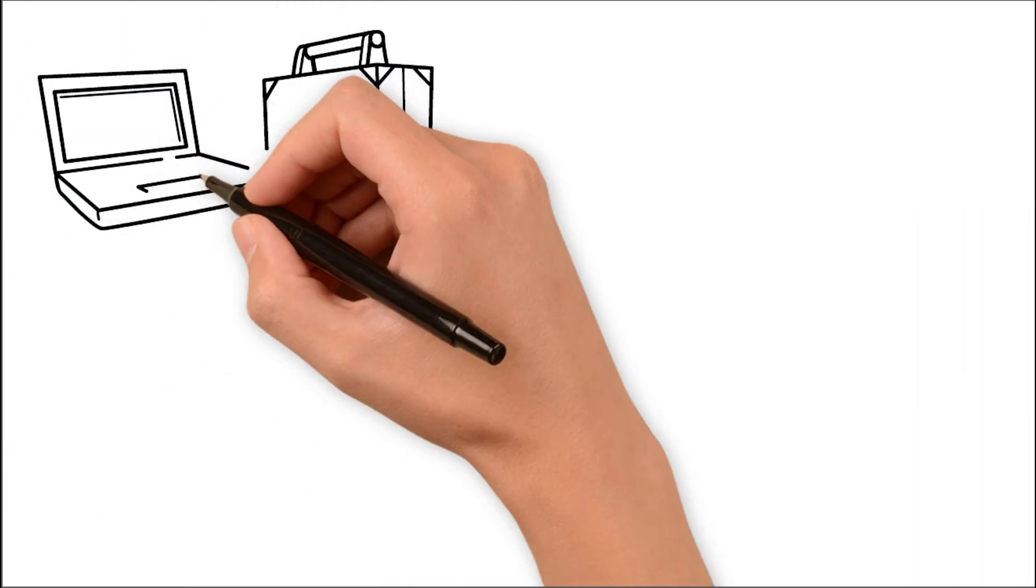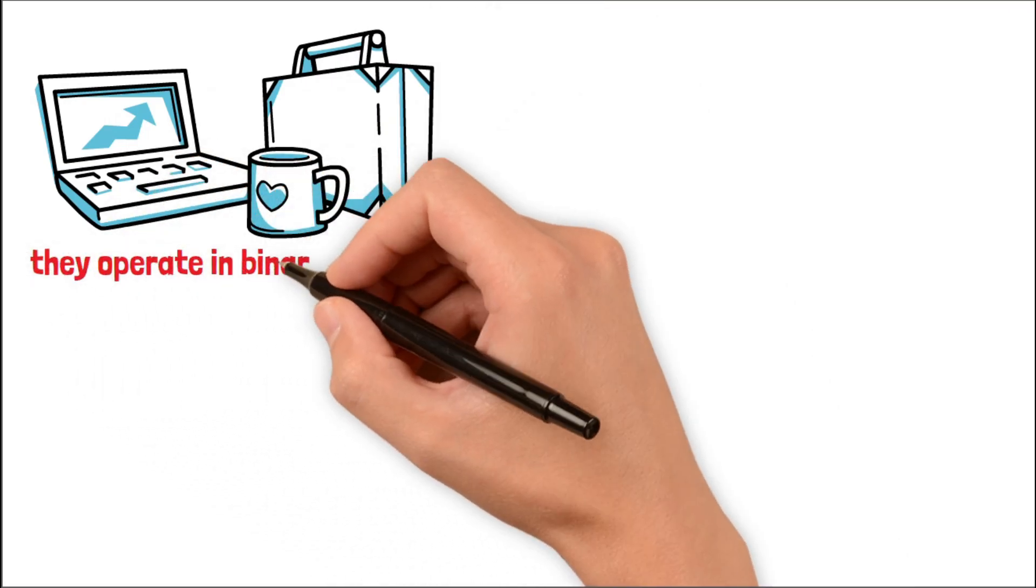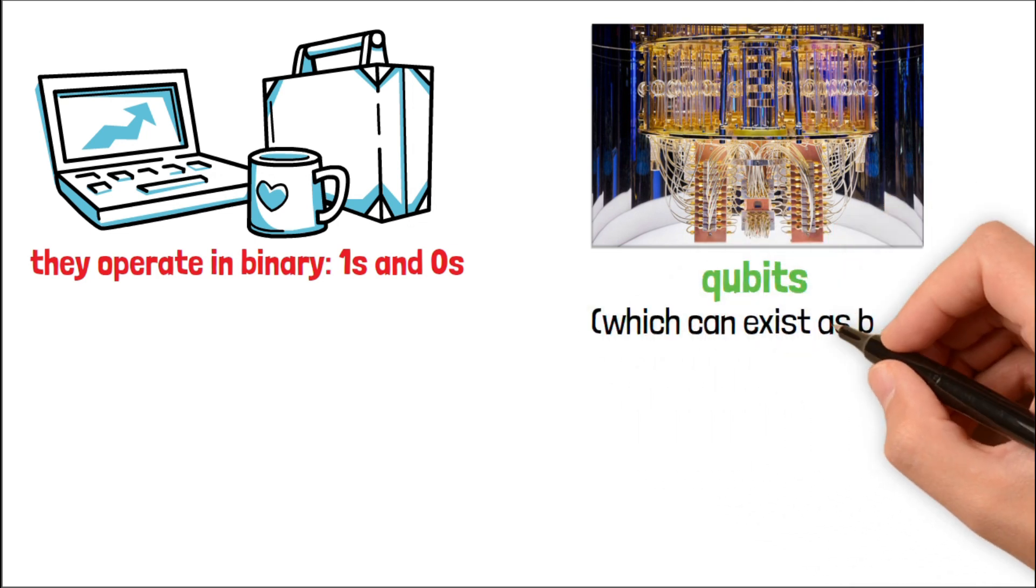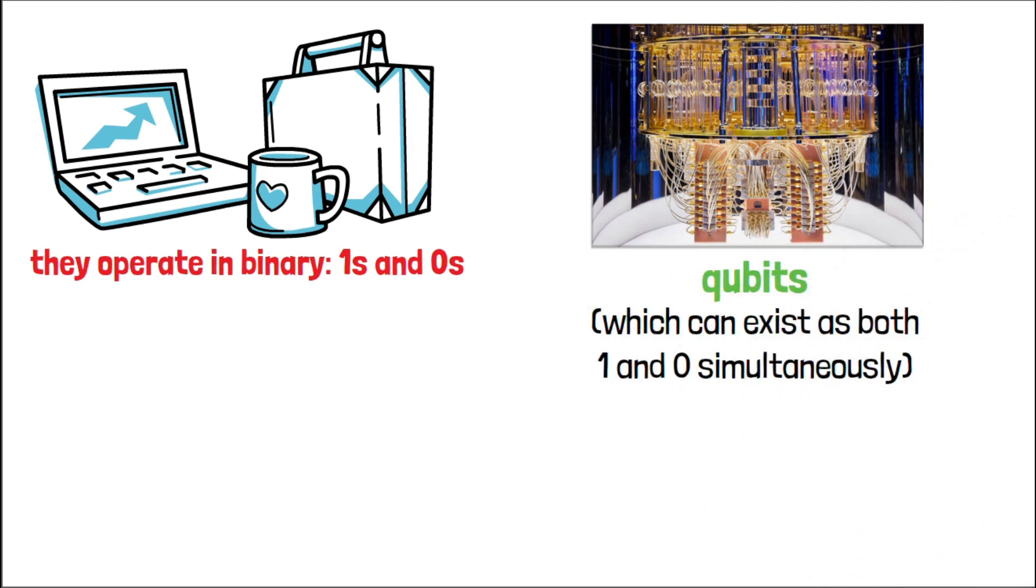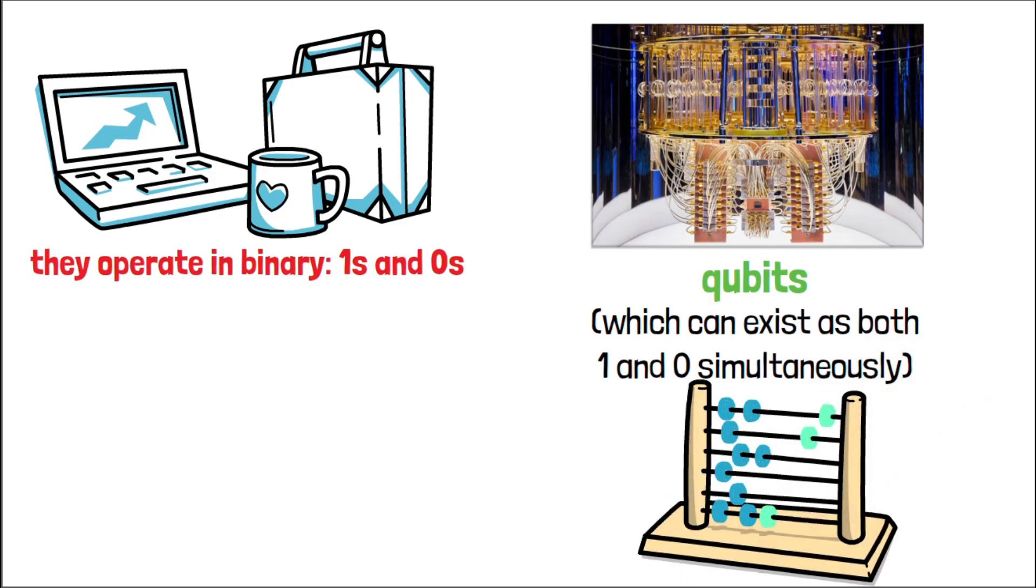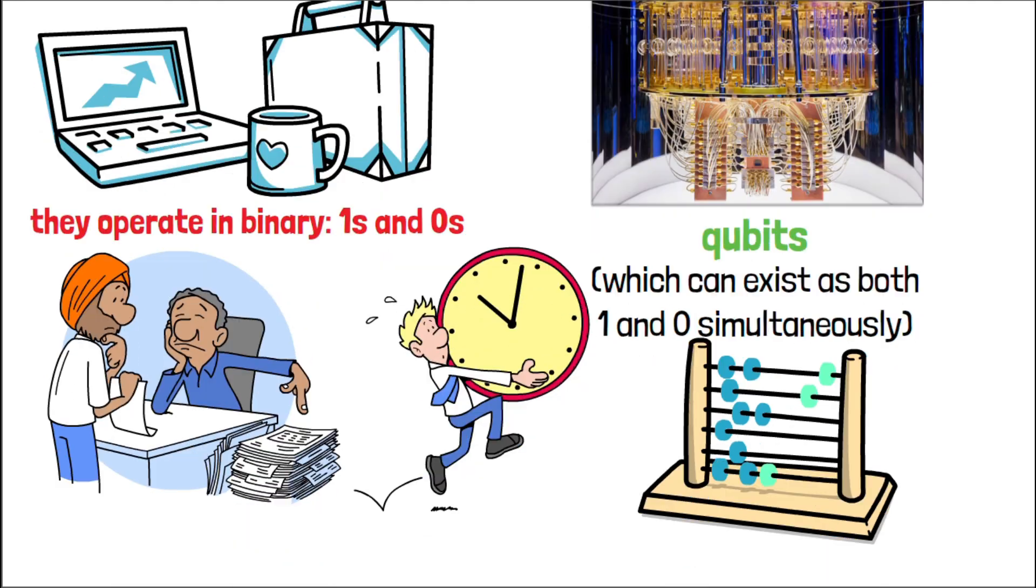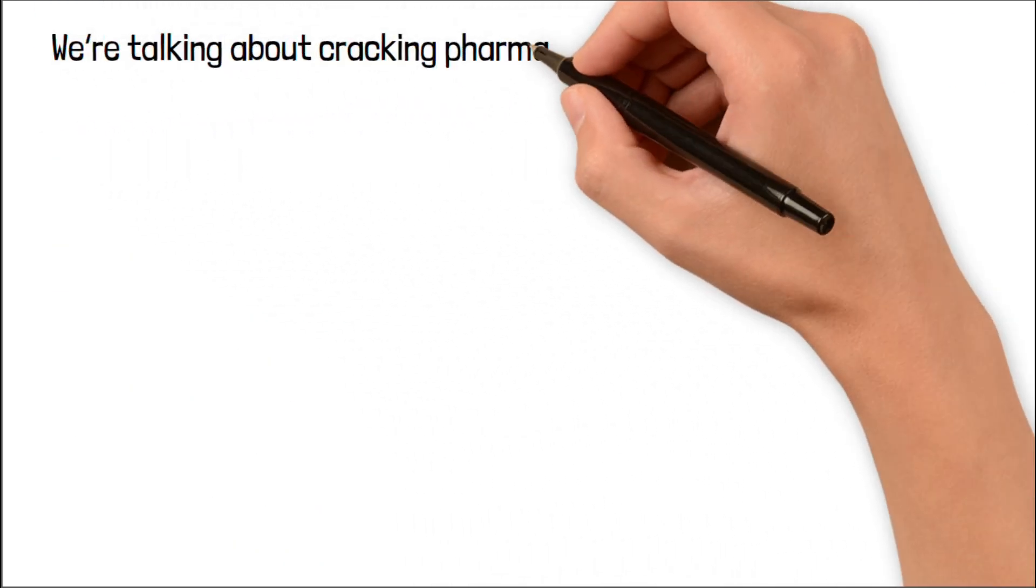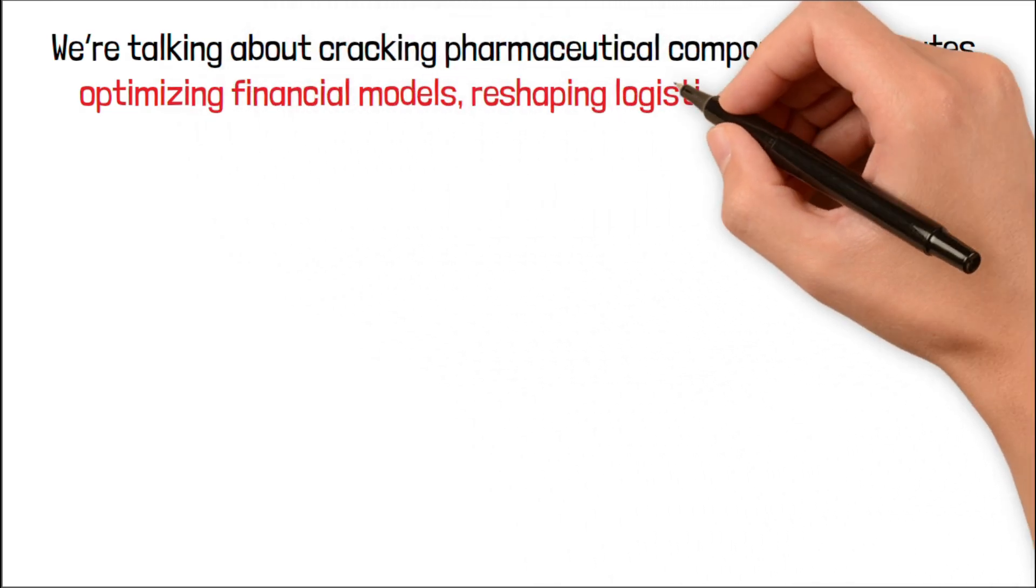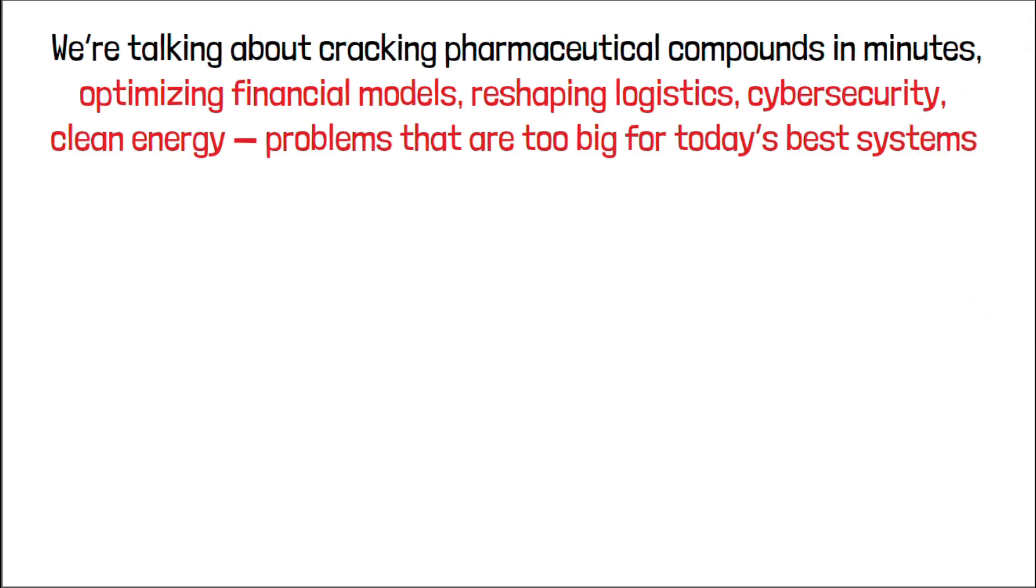See, traditional computers, the ones in your phone, your car, your laptop, they operate in binary. Ones and zeros. Quantum computers operate on qubits, which can exist as both one and zero simultaneously. This allows them to process insanely complex problems that would take classical computers thousands of years to solve. We're not talking about faster spreadsheets here. We're talking about cracking pharmaceutical compounds in minutes, optimizing financial models, reshaping logistics, cybersecurity, clean energy, problems that are too big for today's best systems.